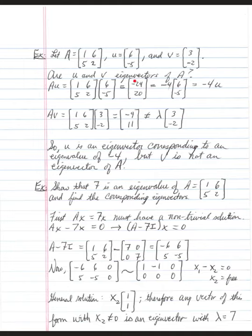A times U gives us this 2 by 1 matrix, which just happens to be a scalar multiple of vector U. So A times U works out to negative 4 times U. A times V, we don't get the same result. Matrix A times vector V. If you multiply these, you get negative 9 and 11.